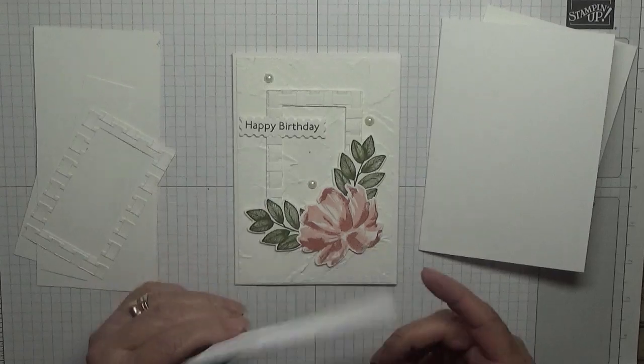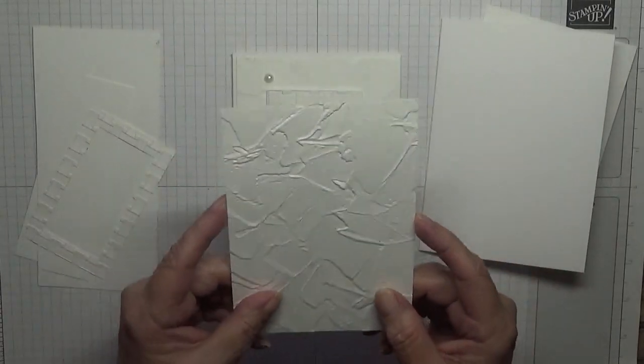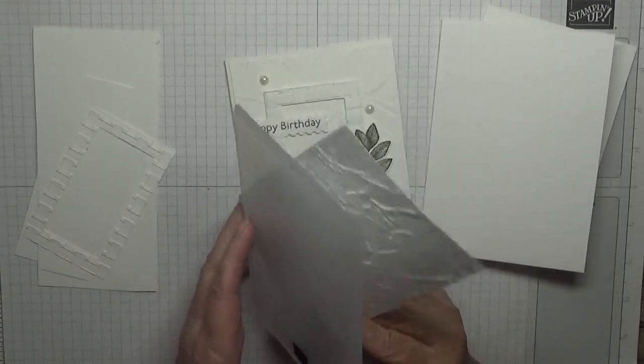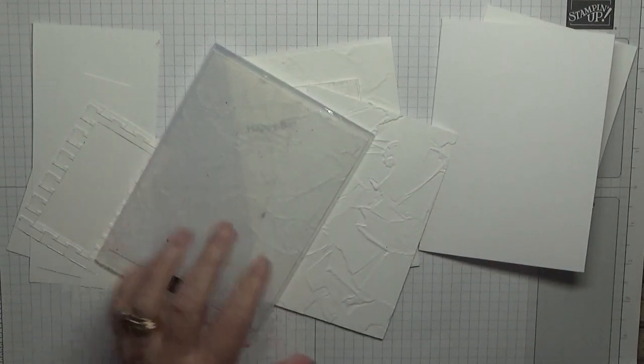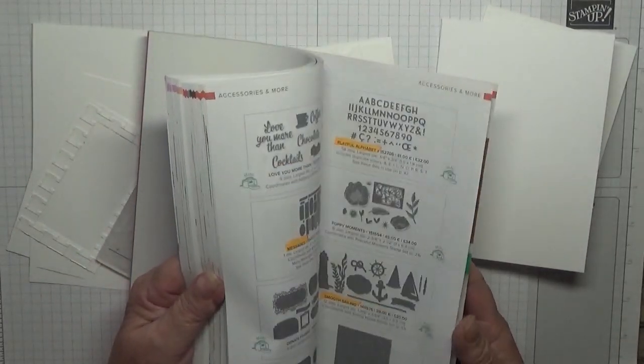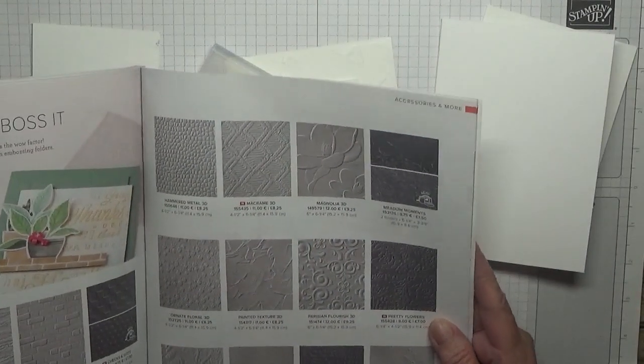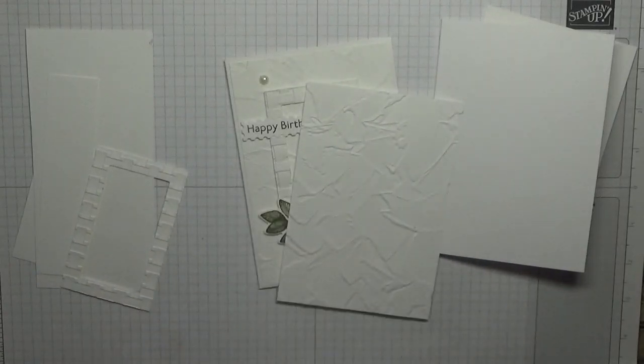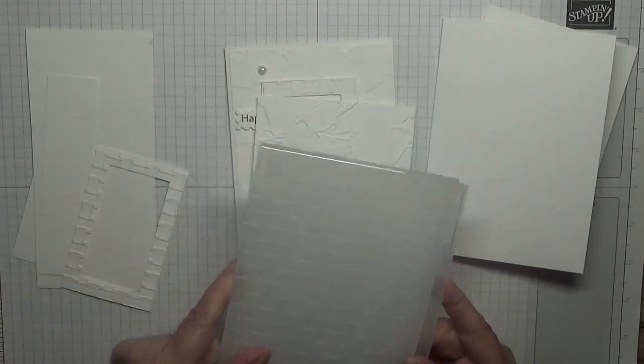One for the inside and one for the front which is already embossed, and I used this embossing folder called Painted Texture. It's a Stampin' Up one, new to me. I've not long had it and I've also used the Basket Weave one from Stampin' Up.